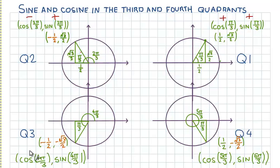In the third quadrant, cos is negative and sine is negative as well. When we go to the fourth quadrant, cos has become positive but sine remains negative.